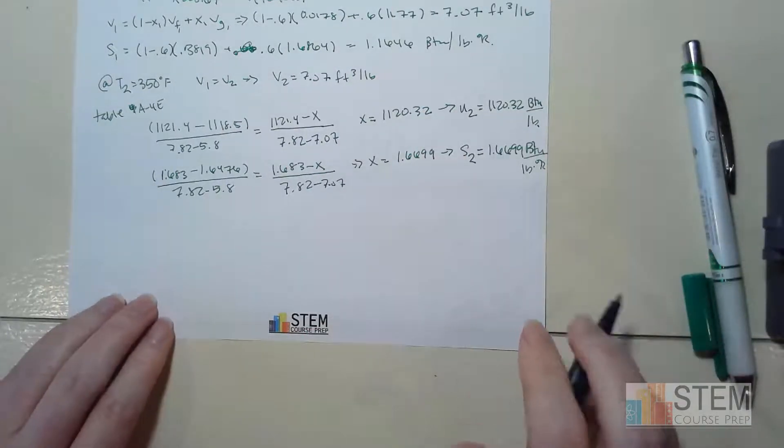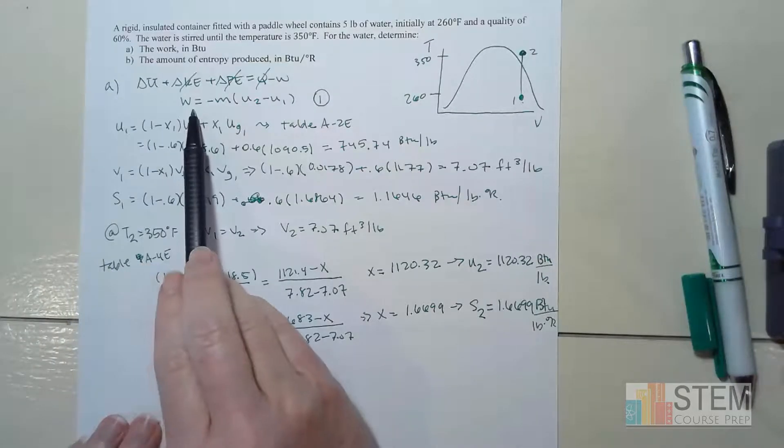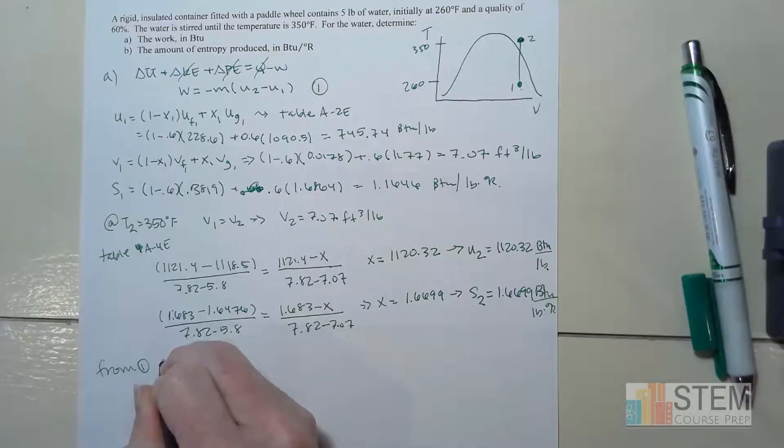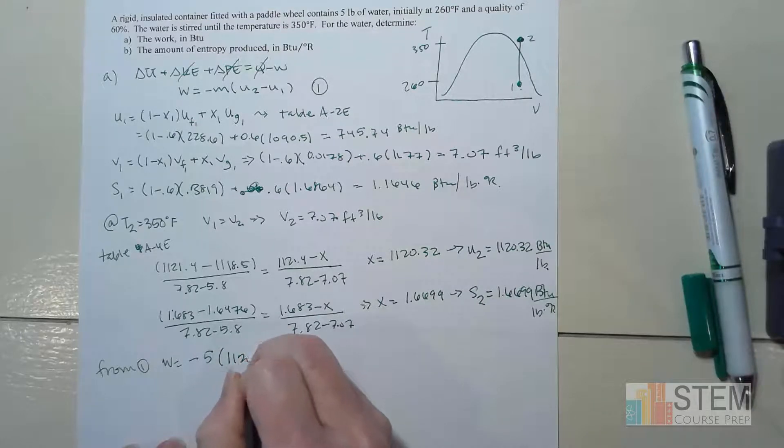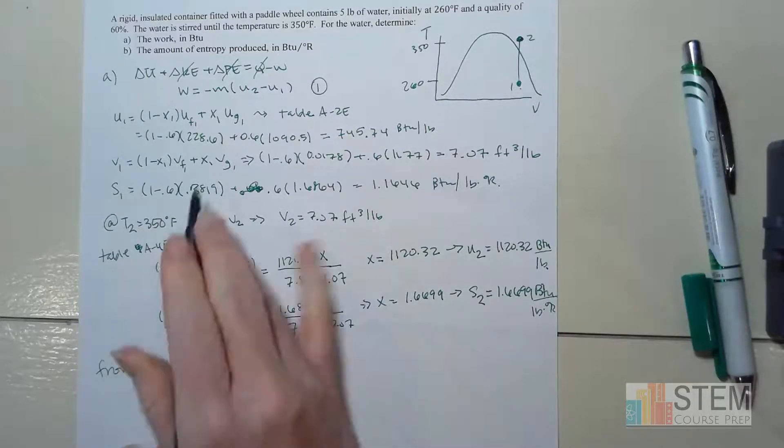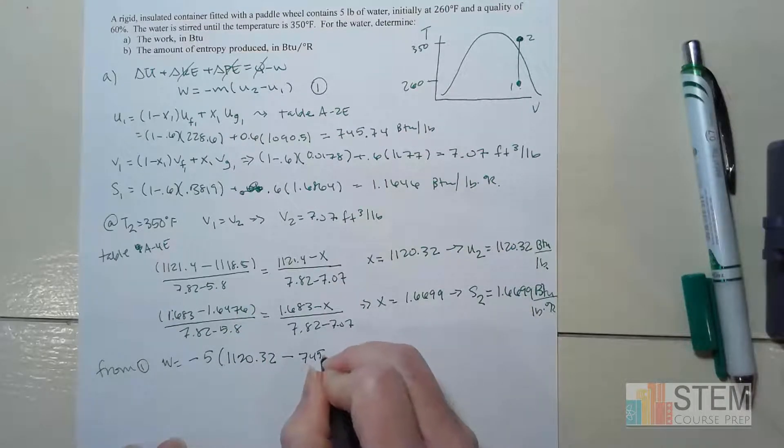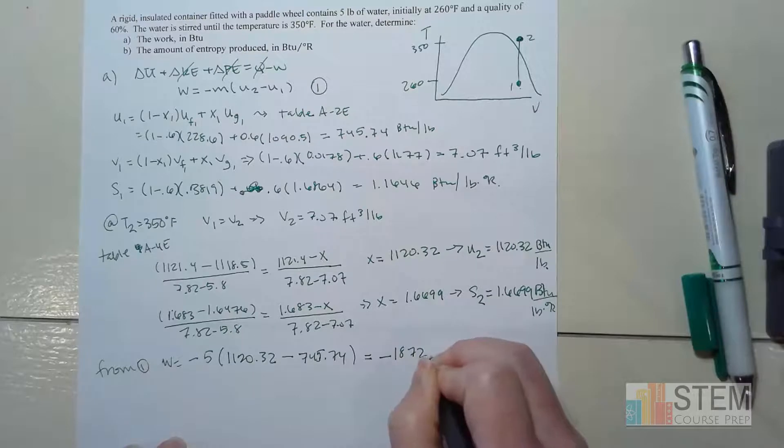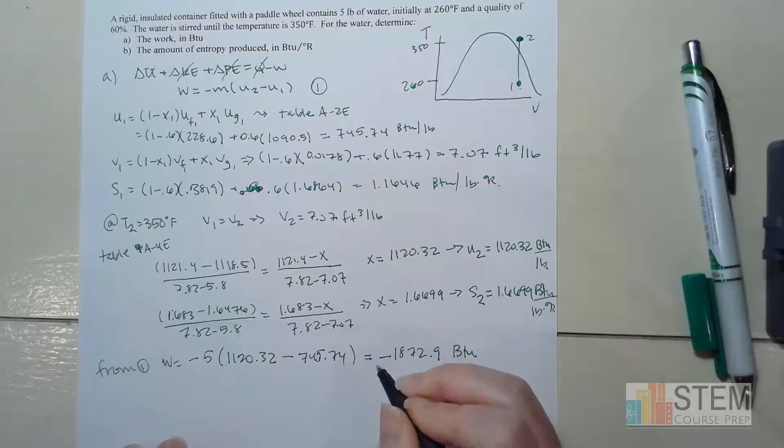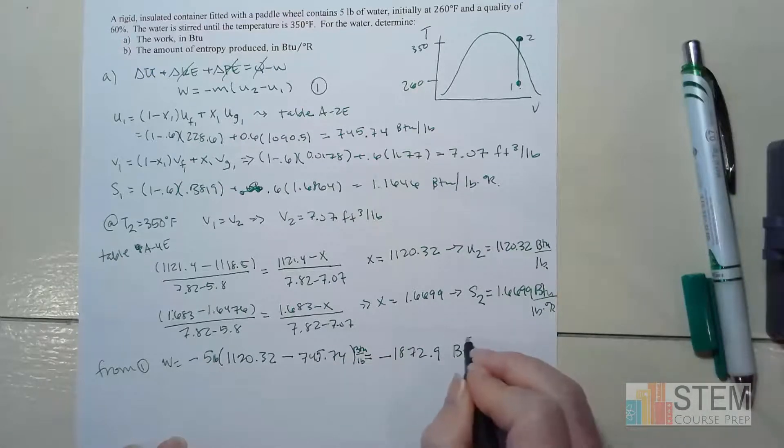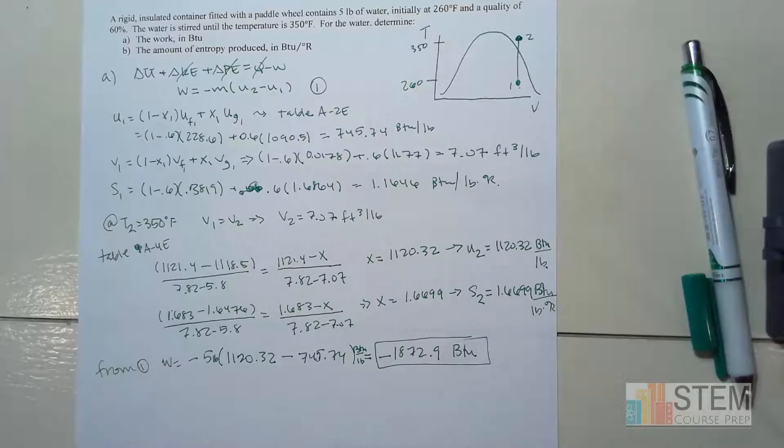Now we've got all this figured out, so we can finally get the values we're looking for. For work, we use equation 1: negative times the mass (5 pounds) times (U2 - U1), which is 1120.32 minus 745.74. That gives us work = -1872.9 BTU. The pounds cancel out, so this will be our work.